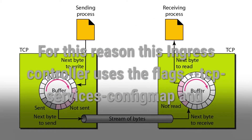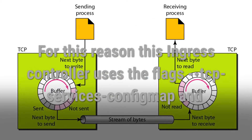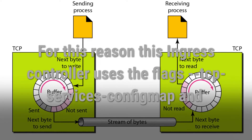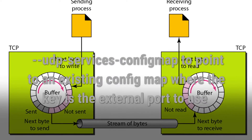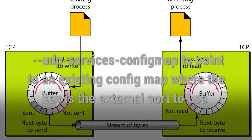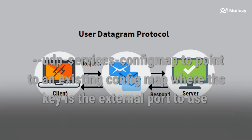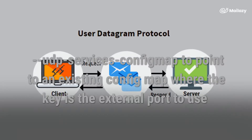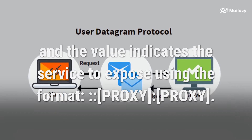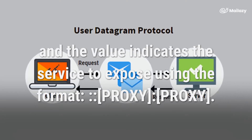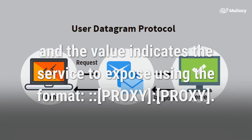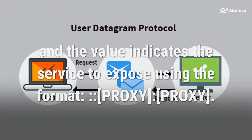For this reason, this Ingress controller uses the flags TCP services config map and UDP services config map to point to an existing config map, where the key is the external port to use and the value indicates the service to expose using the format: namespace/service-name:service-port.